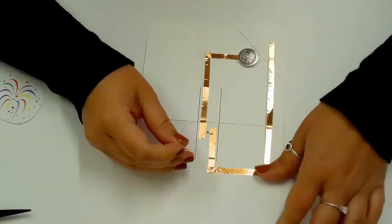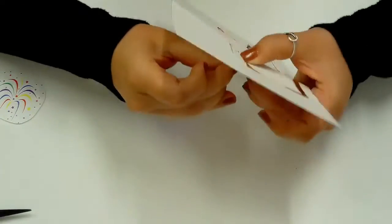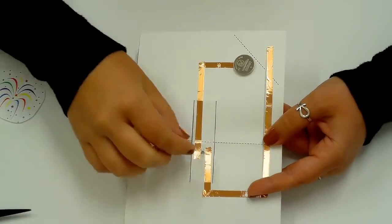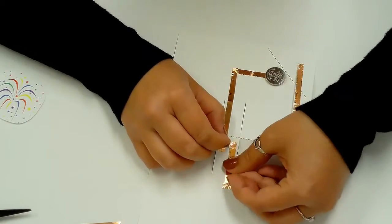Stick the arms of the LED light through the front of the card so the arms stick out the back. The shorter arm is negative which gets folded and stuck to the line leading to the battery. The longer arm is positive and gets folded and stuck to the line not touching the battery.